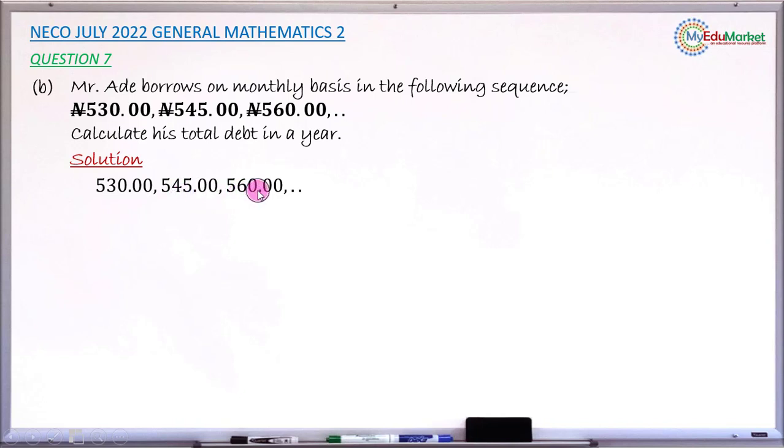Which means this can be an AP sequence that has a first term 530 and the common difference, that is what we keep adding to get the next, 15 Naira.